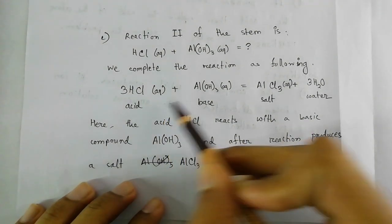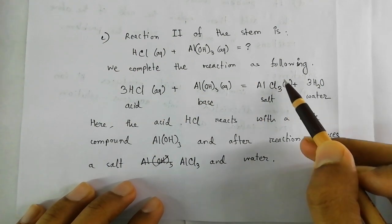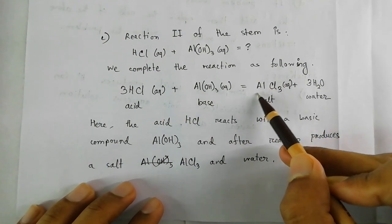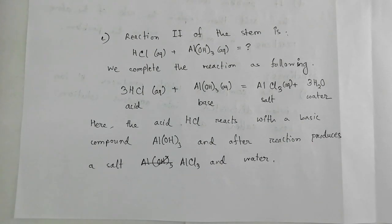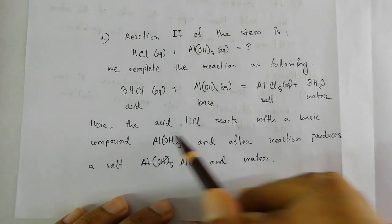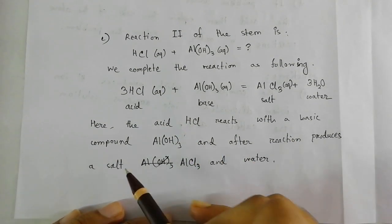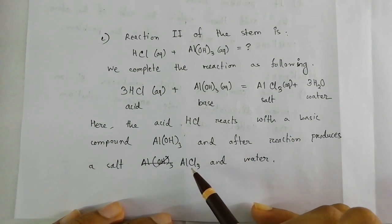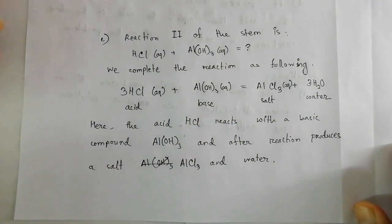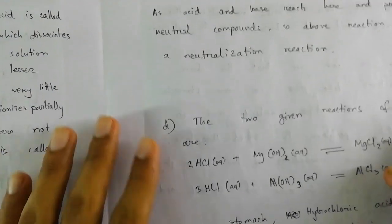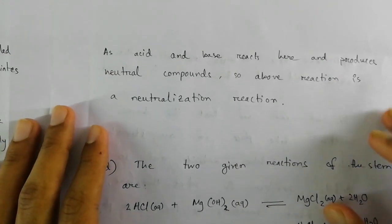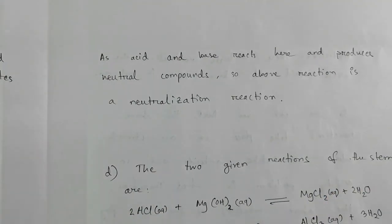AlCl₃ is a salt — a metal and non-metal forming an ionic compound. The acid HCl reacts with the basic compound aluminum hydroxide to produce salt AlCl₃ and water. Because an acid and a base react to produce neutral compounds, this reaction is called a neutralization reaction, or an acid-base reaction.